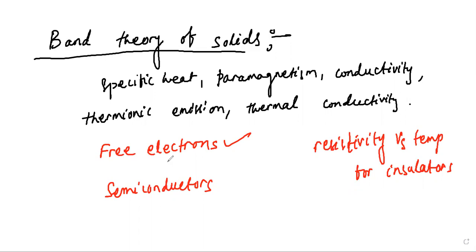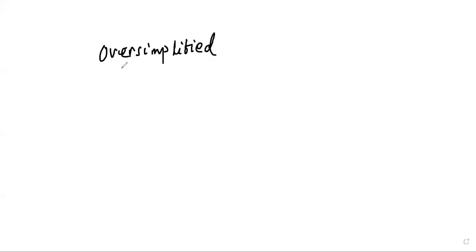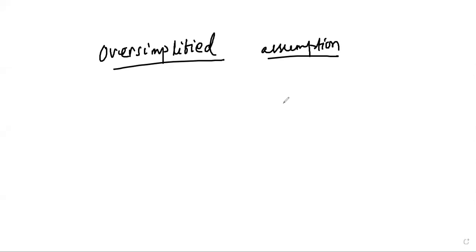The failure of this free electron model is because of a very oversimplified assumption: that a conduction electron in a metal experiences a constant or zero potential. The electron is free to move in the conduction band and doesn't experience any potential due to the ion cores present in the crystal lattice. The motion is restricted only by the surface of the crystal.